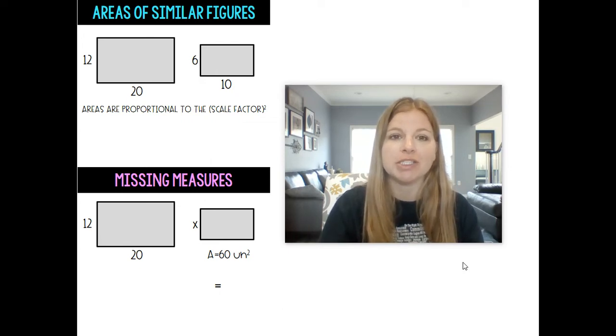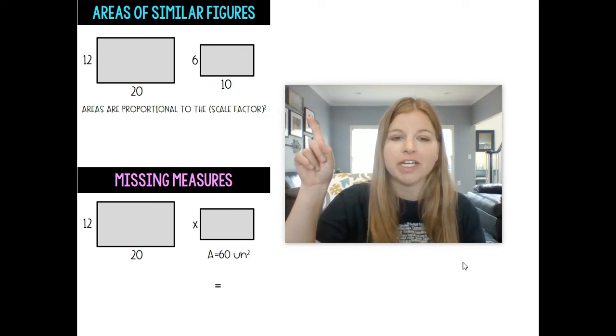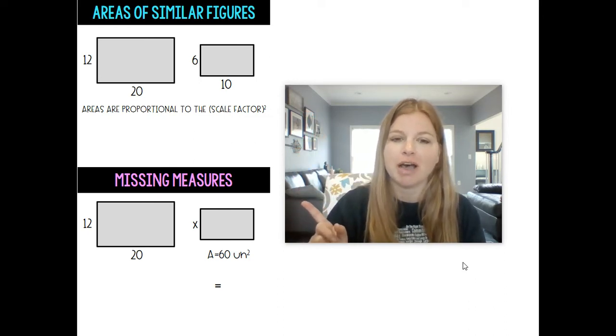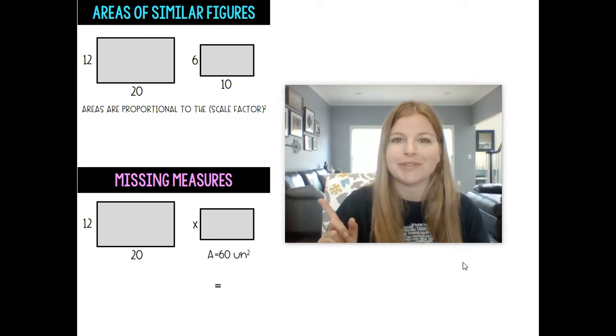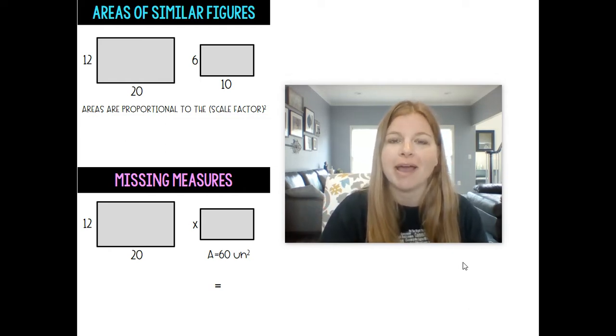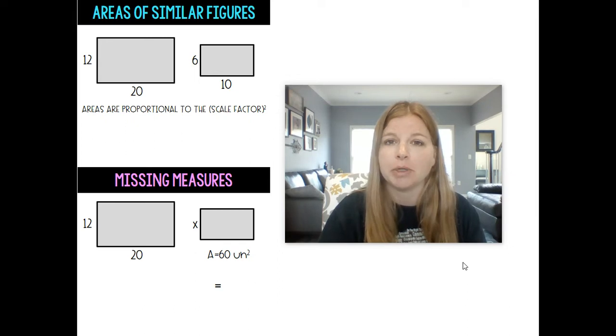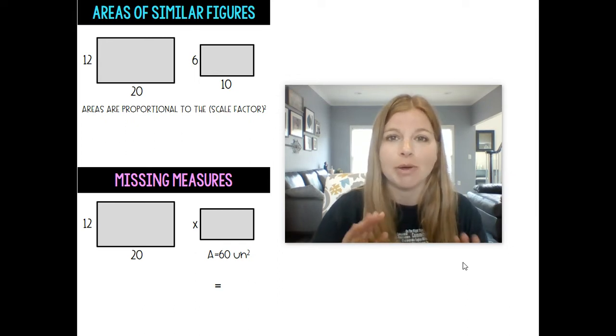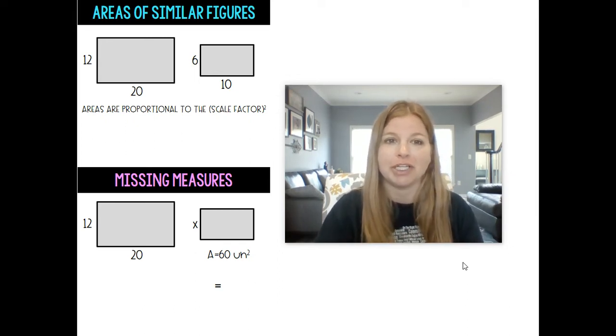First we're going to discuss the specific areas of similar figures and then we're going to find missing measures of rectangles or any kind of similar figure. This first example is of course a rectangle and it's a pretty easy proportion to solve. I just have to set you up in the right way and then you're going to be really good to go.